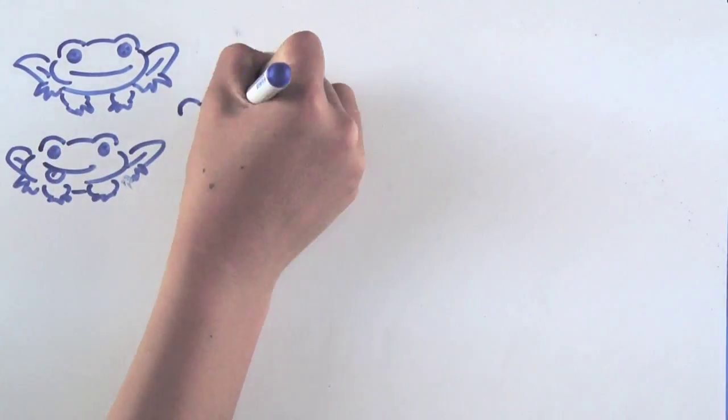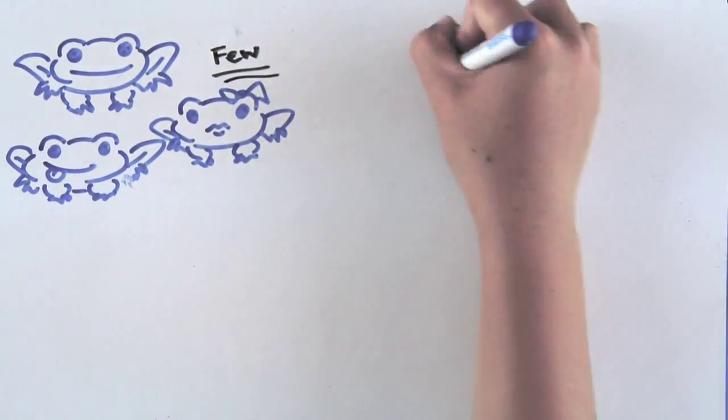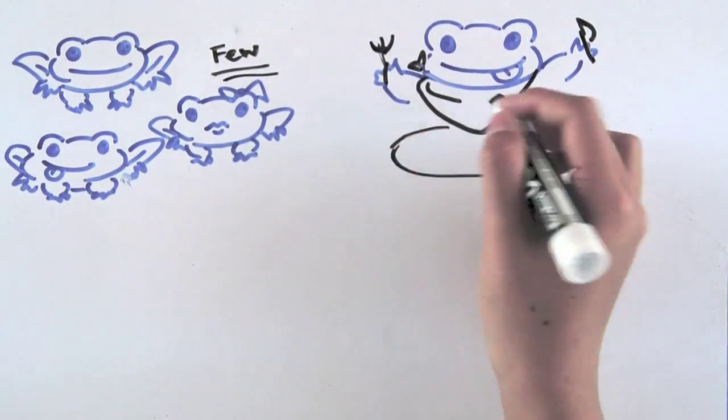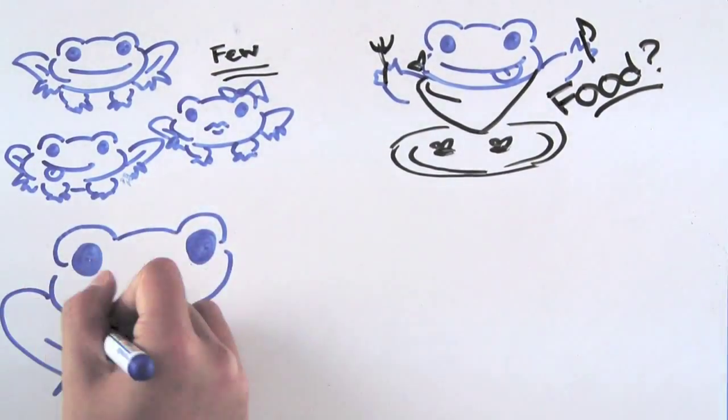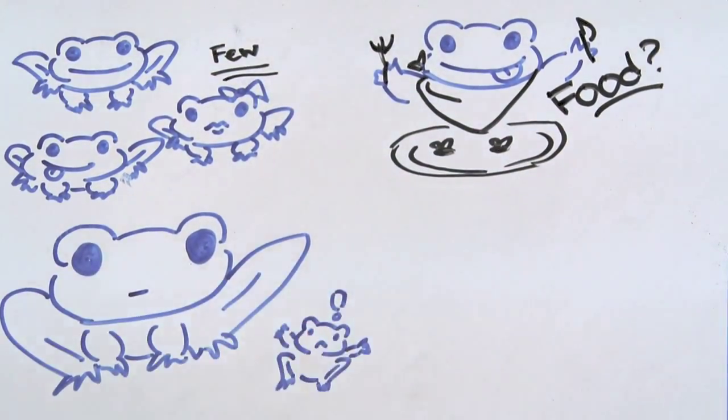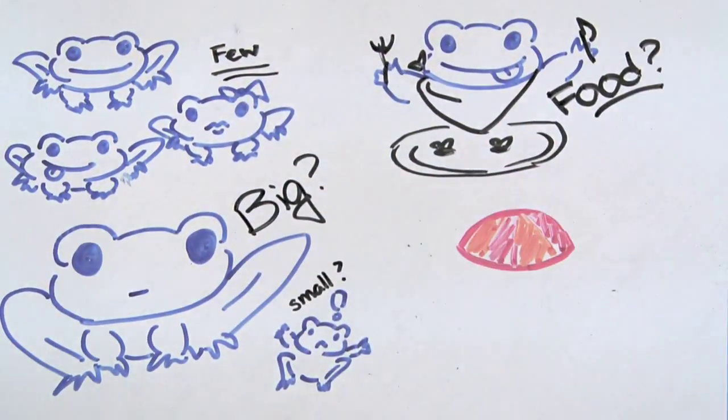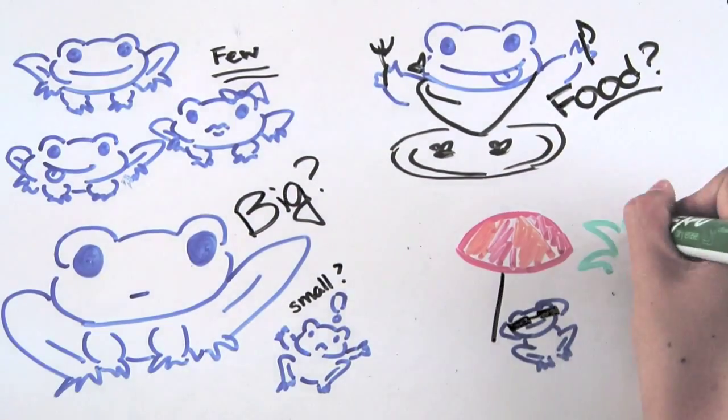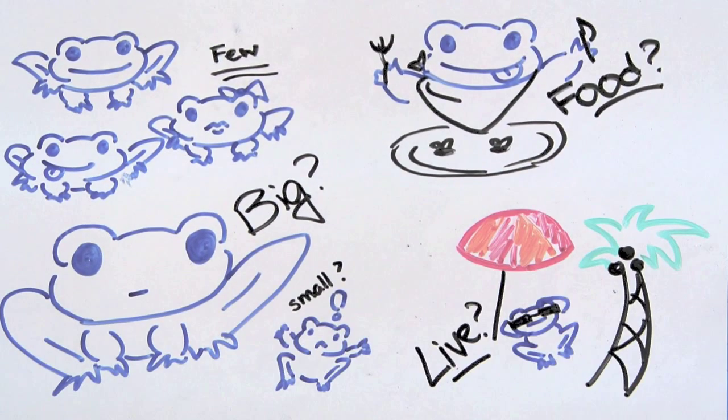The first logical step when encountering this new species is to start documenting its characteristics. How many are out there? What does it eat? How big does the sapphire frog get when it's fully grown? What kind of environment do they like? And how long does it live? Are there any unique or interesting traits that it has? And many, many other questions.